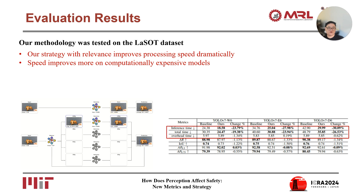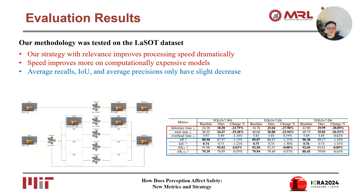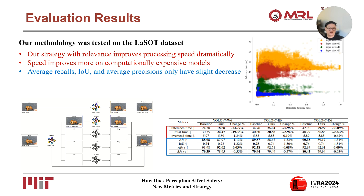The speed improves more on computationally expensive models. According to the last four rows of the results, which cover average recall, intersection over union, average precision at 0.5 and 0.75, it is found that the accuracies of the algorithm only slightly decrease with our strategy. The figure on the right shows the processing speed of each frame. The vertical axis represents the inference speed. Different colors represent the size of the neural network's input for further processing. It is found that smaller input sizes correspond to lower inference time, which agrees with common sense.